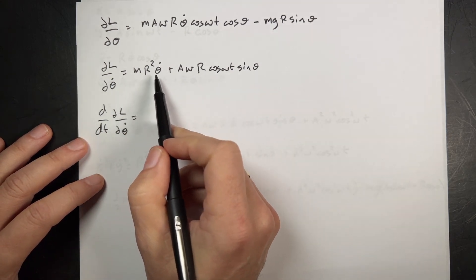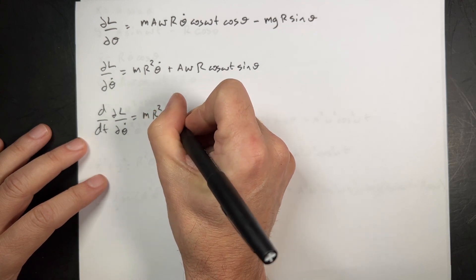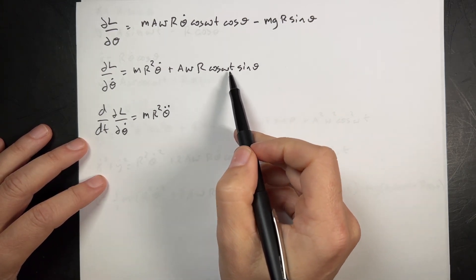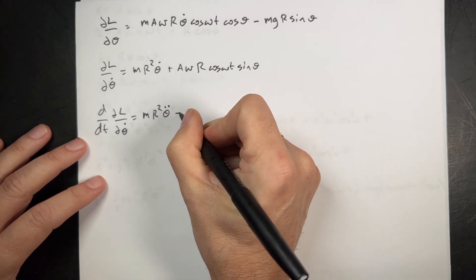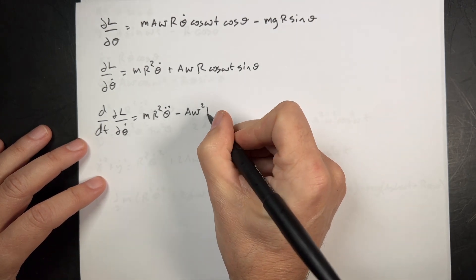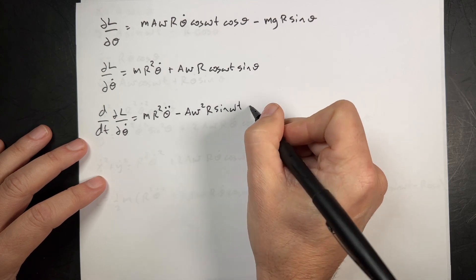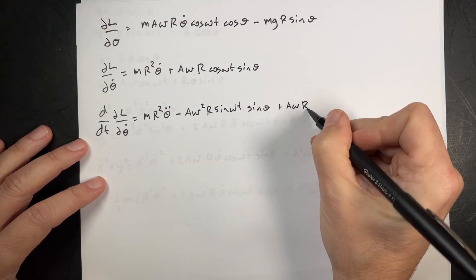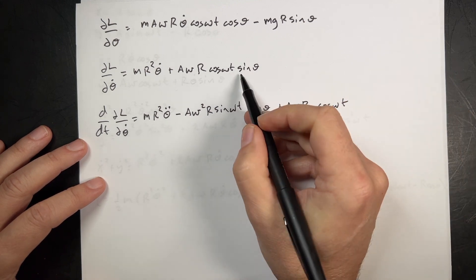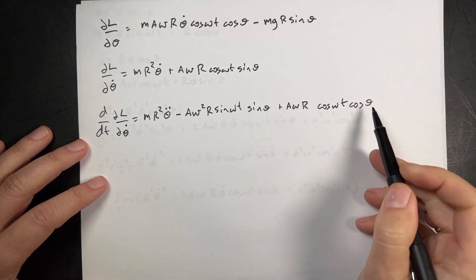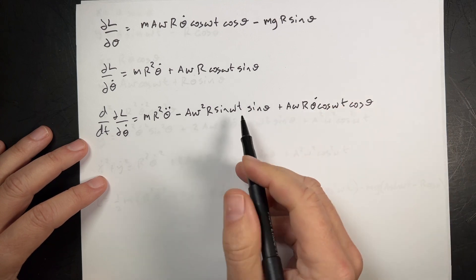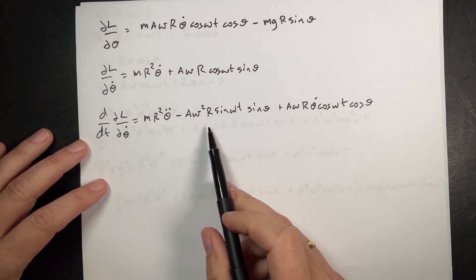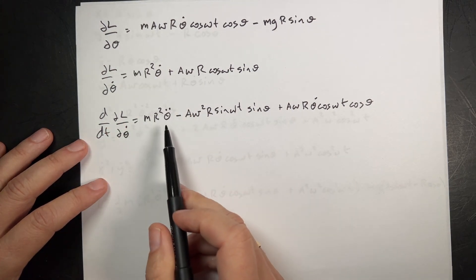Now I take the time derivative of the partial of L with respect to theta-dot. The first term gives m r squared theta-double-dot. For the second term, I have two time-dependent parts — using the product rule: the derivative of cosine omega t gives negative a omega squared r sine omega t times sine theta, plus a omega r cosine omega t times the derivative of sine theta, which is cosine theta times theta-dot. Setting the partial w.r.t. theta equal to this time derivative, every term has mass m so it cancels.